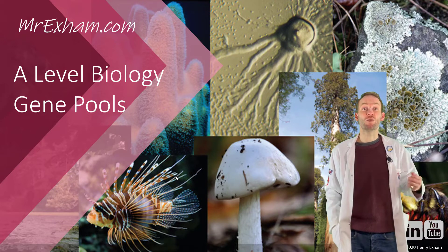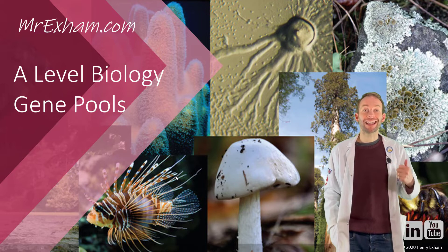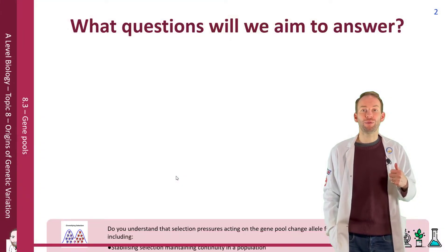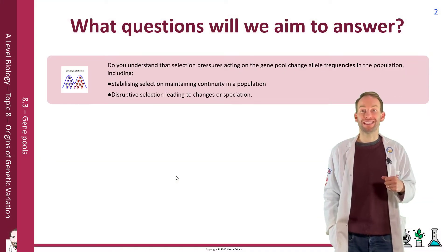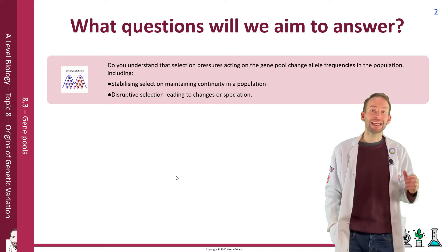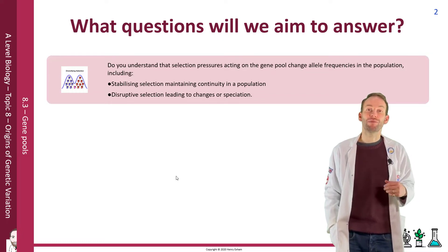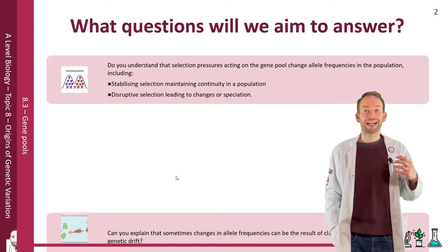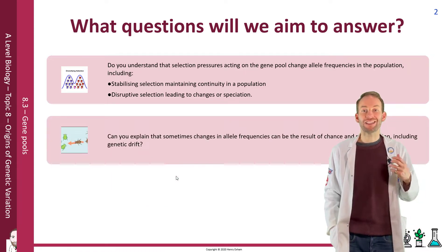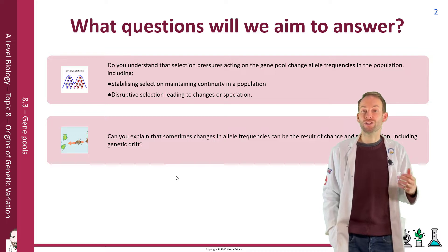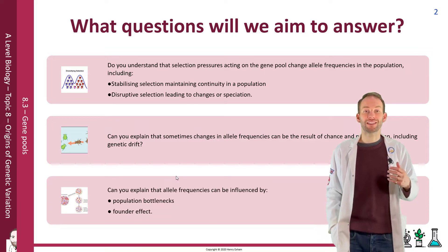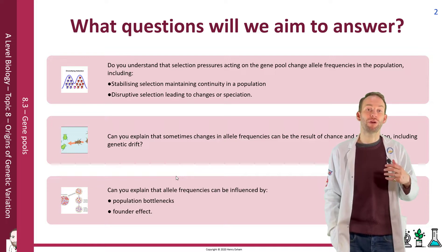This lesson is all about gene pools. We're going to try and understand the idea that selection pressures acting on the gene pool change allele frequencies in the population, including stabilising selection and disruptive selection. We're also going to look at how changes in allele frequency can be the result of chance and not selection, including genetic drift, population bottlenecks, and the founder effect.